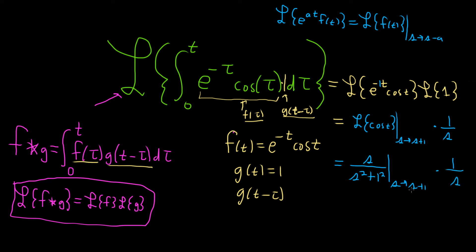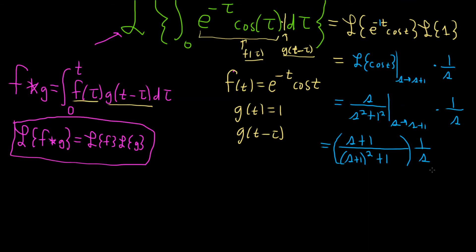The last thing to do is replace all of the s's here with s plus ones. So this is s plus one over s plus one squared plus one, and then times one over s. That's a pretty good answer. You can write it as a single fraction, let's do that.